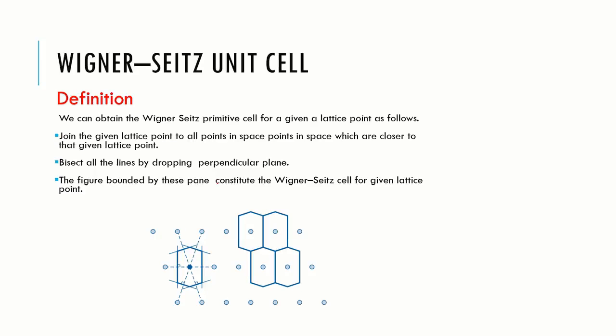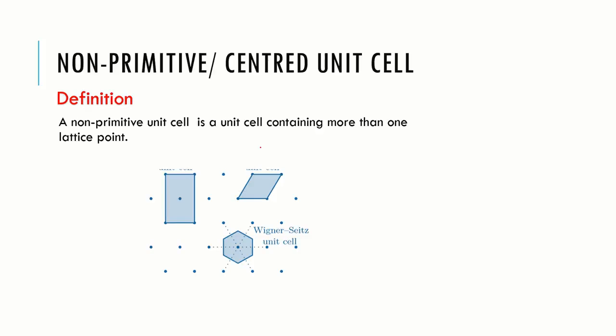We can obtain the Wigner-Seitz primitive cell for a given lattice point as follows: join the given lattice point to all points in space which are closer to that given lattice point, bisect all the lines by dropping the perpendicular plane. The figure bounded by these planes constitutes the Wigner-Seitz primitive cell.